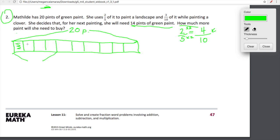4 tenths, 1, 2, 3, 4 tenths are being used for a landscape. And then we have 3 tenths, 1, 2, 3 tenths are being used to paint the clover. We're using quite a bit of that 20 pints of green paint. 4 tenths for the landscape, 3 tenths for the clover. We do have 3 tenths left.